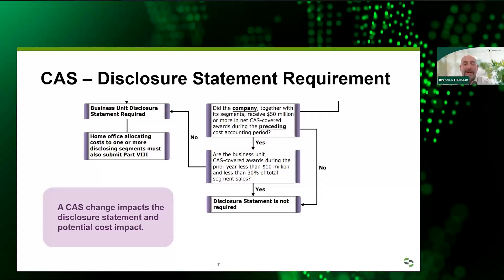One thing we get asked about quite a bit is CAS coverage. The key thing we always remind clients is that it's the contract that is CAS covered. If a contractor was exempt—perhaps they were a small business and then grew into a large business—contracts subsequent to making that transition to a large business could be CAS covered. But contracts they had prior to that don't automatically become CAS covered. So as you're tracking contracts, it's important to keep that in mind.